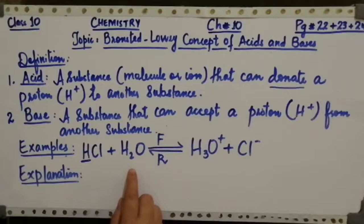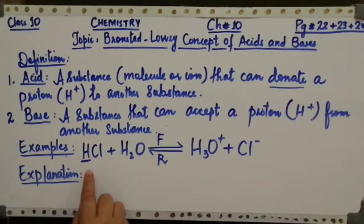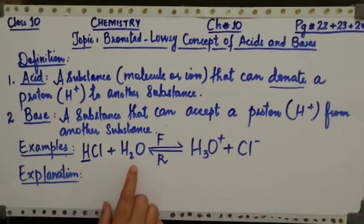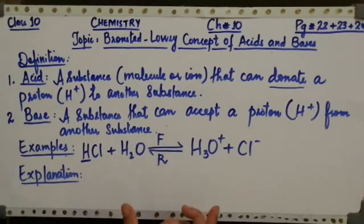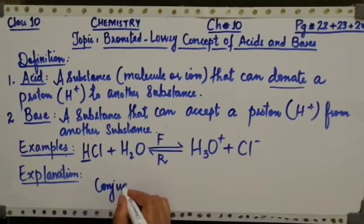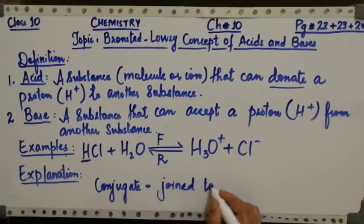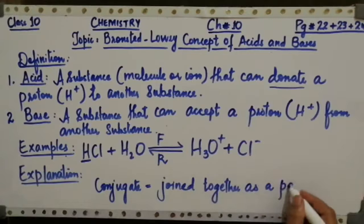Every acid produces a conjugate base — in this case chloride ion. Every base produces a conjugate acid — in this case hydronium ion from water. So a conjugate acid-base pair is formed. The meaning of conjugate here is combined or joined together as a pair.